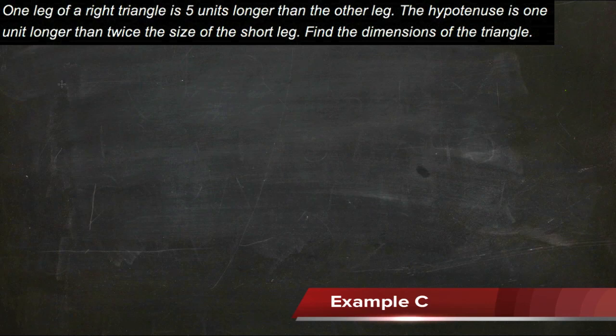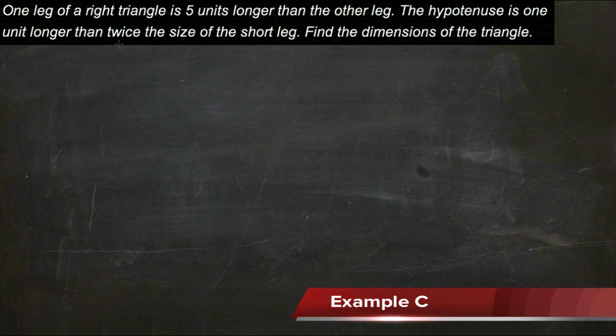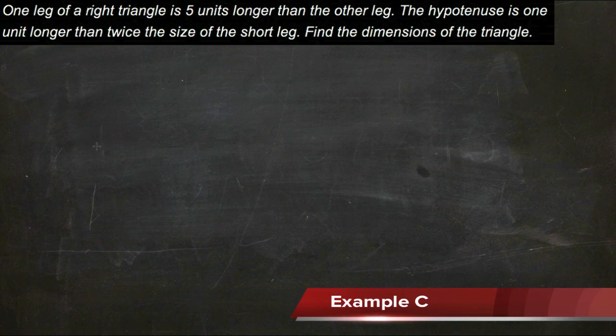Here's a slightly different application of the Pythagorean Theorem. We have a description of a triangle that doesn't really have any specific links, so we're going to have to use variables to put in place of the three different sides and see if we can solve for all three of them.